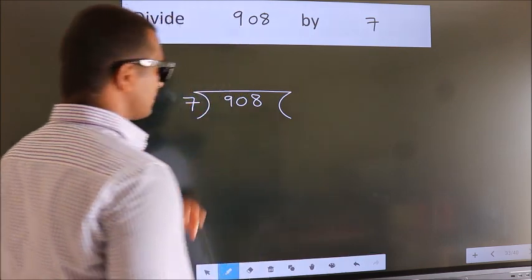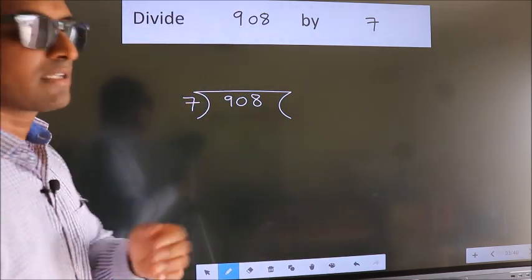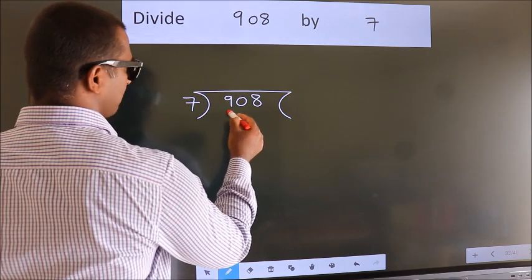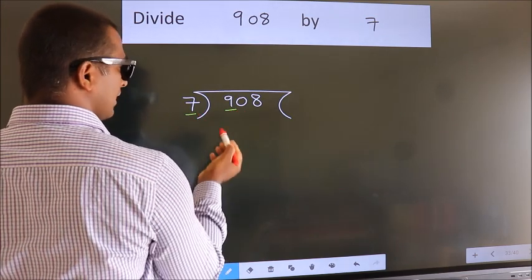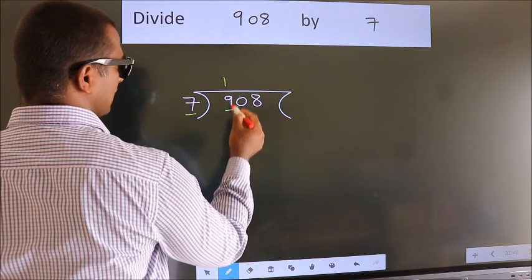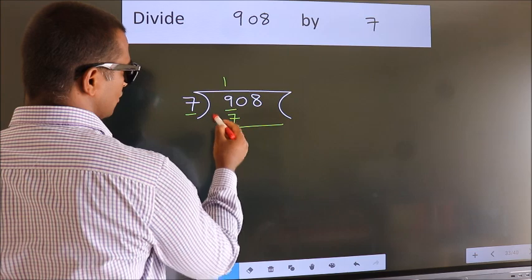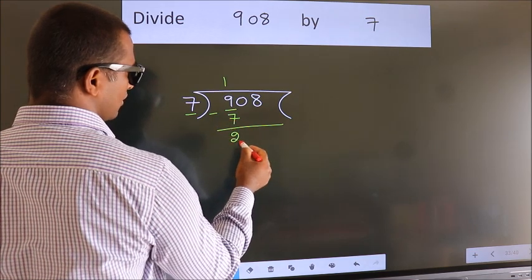This is your step 1. Next, here we have 9, here 7. A number close to 9 in 7 table is 7 once, 7. Now, we should subtract. We get 2.